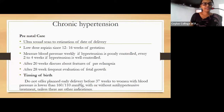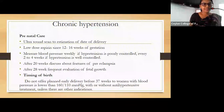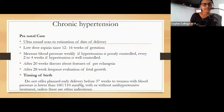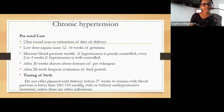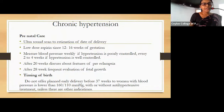For prenatal care in patients with chronic hypertension, arrange an ultrasound scan to estimate the date of delivery and give low-dose aspirin from 12 to 16 weeks of gestation. For well-controlled blood pressure, arrange monitoring every two to four weeks. After 20 weeks, discuss features of preeclampsia with the patient. After 28 weeks, preeclampsia surveillance should be performed.